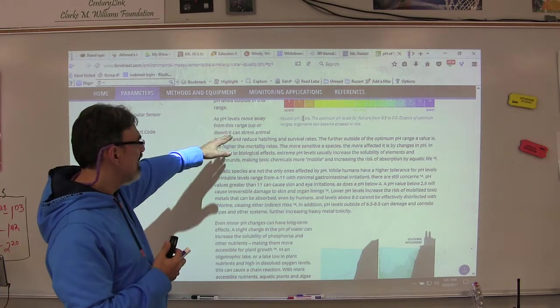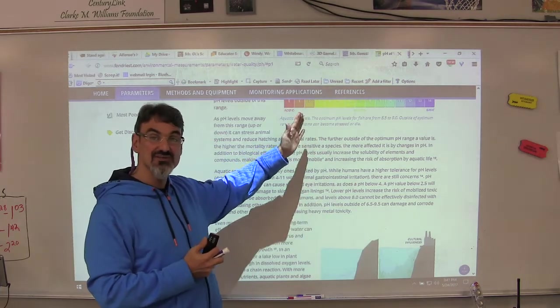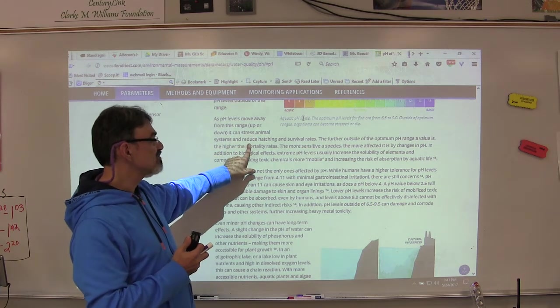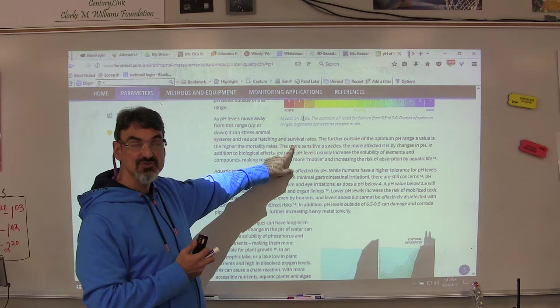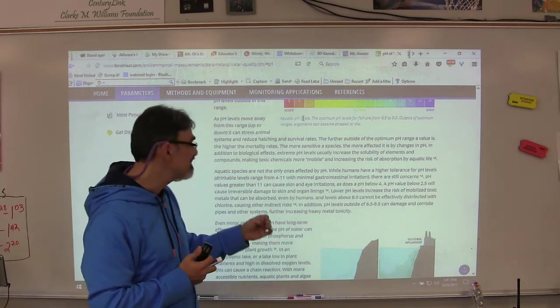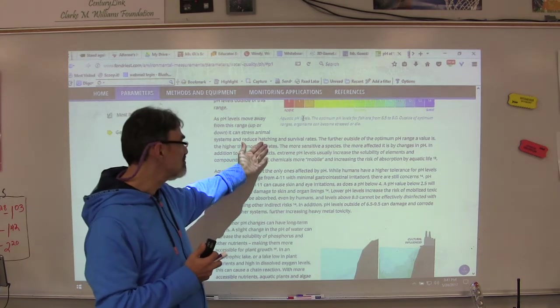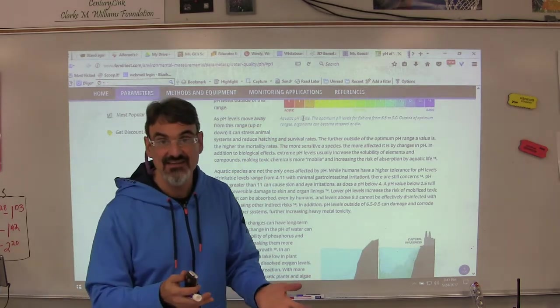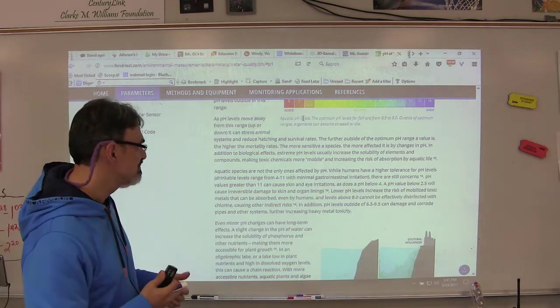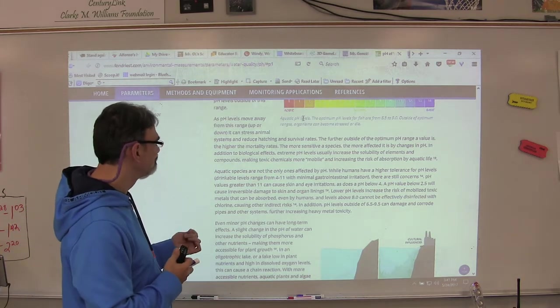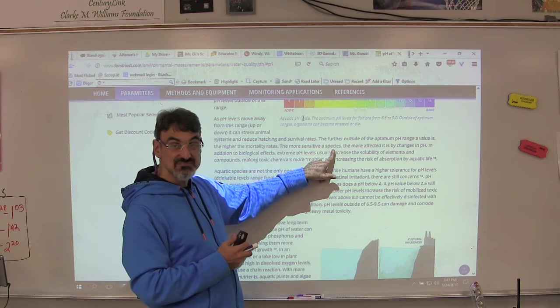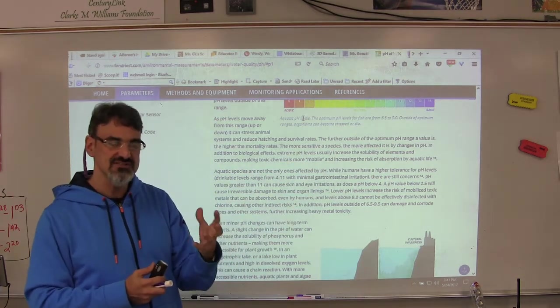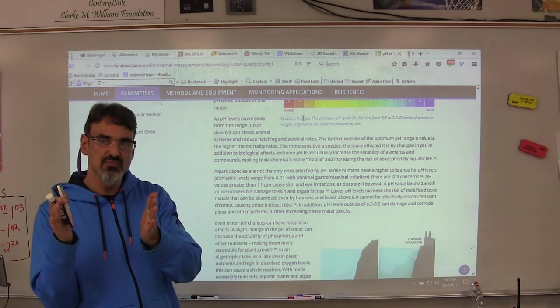It says here when the pH level gets beyond what they can survive in, it can stress animal systems, reduce hatching and survival rate. So even if it doesn't kill the fish, it'll make it so their eggs don't hatch or they won't survive even to the point of laying the eggs. And that will impact returning fish because there won't be many to return. The more sensitive a species, the more affected by changes in pH. Hardier species will withstand more pH change.